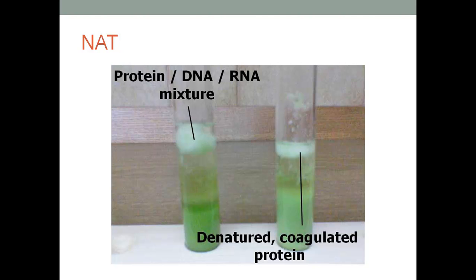Nucleic acid testing, or NAT, is a biochemical technique used to detect viruses and bacteria. It was developed to shorten the time between when a patient has been affected and when they would show up positive on an antibody test. It looks at protein, RNA, and DNA — with just a few bacteria or viruses, quick results can be obtained. When we donate blood, this is how it's tested. It's also used to determine if somebody has hepatitis and gives a quicker response in those exposed to HIV.